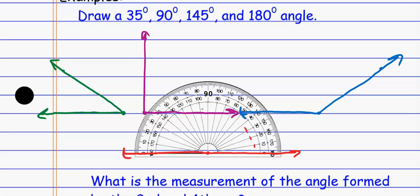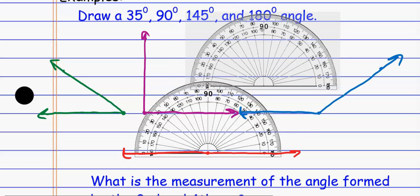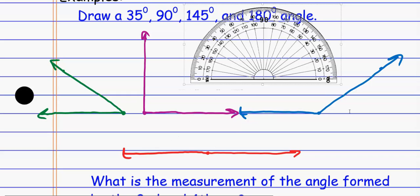And so instead of using the protractor on that one, I could have easily just drawn a line to represent this thing because I know that 180 degrees is a straight angle. So it gives me a little bit of a shortcut built in there.